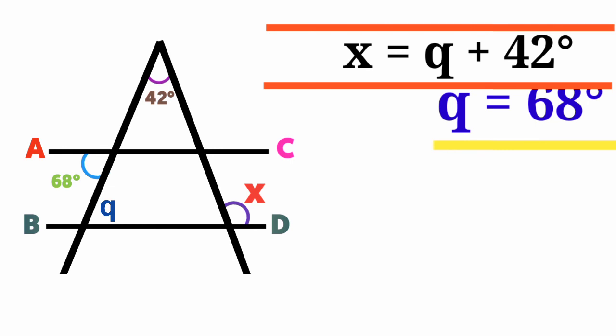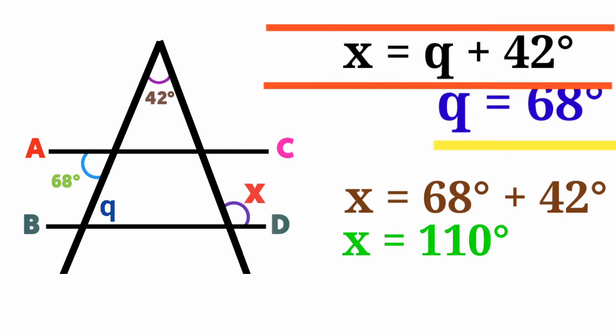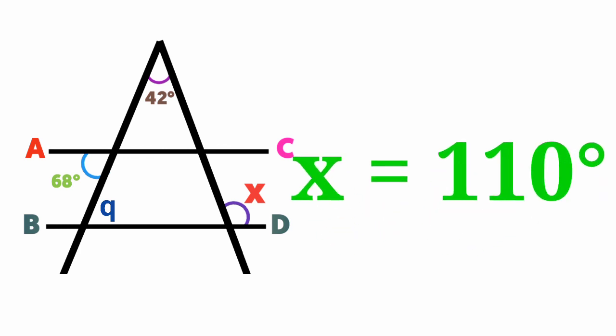X is equal to 68 degrees plus 42 degrees. X is now equal to, press your calculator, 68 degrees plus 42 degrees is equal to 110 degrees. Simple and straightforward. Please subscribe to this channel.